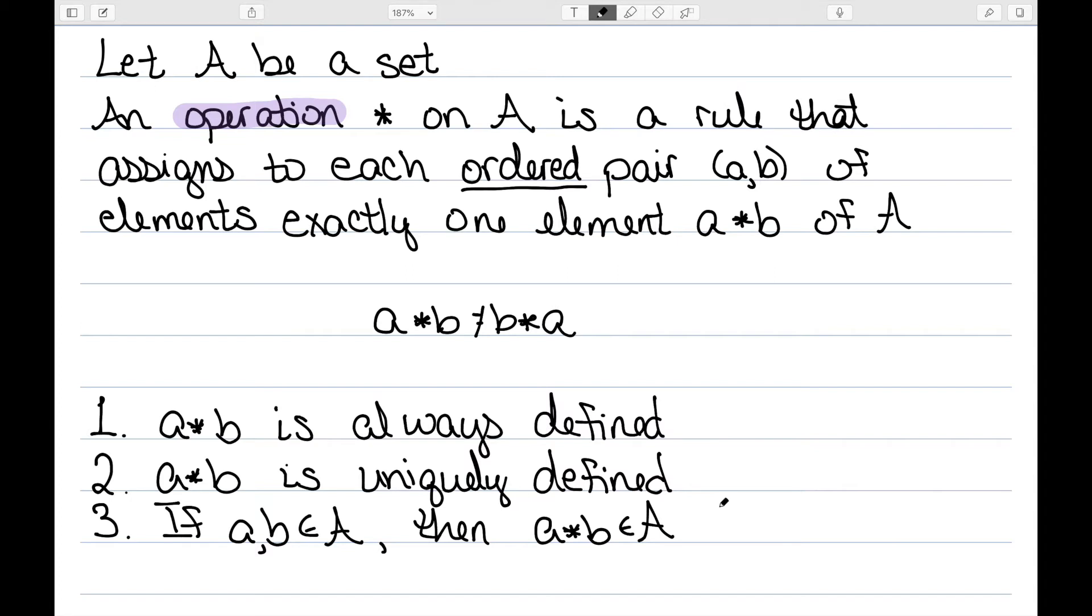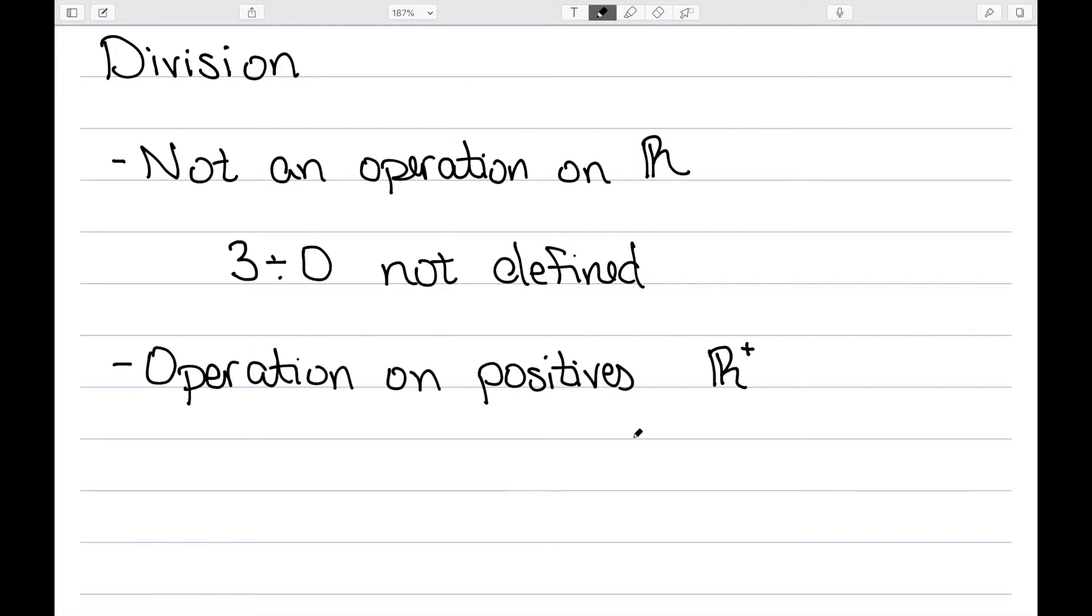So let's look at some very basic examples. Let's start with division. Division is not an operation on R, as I said before, since three divided by zero is not defined. So it's not an operation on the real numbers. It is an operation on the positive real numbers, which we denote by R plus to indicate that we're only talking about positives. It's also an operation on the non-zero real, so all numbers except zero, which we denote by R star.